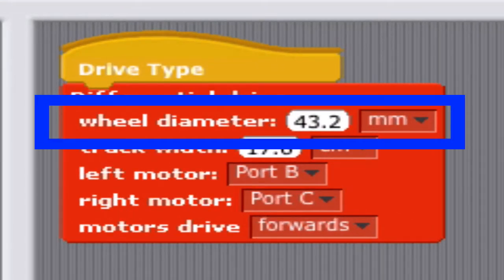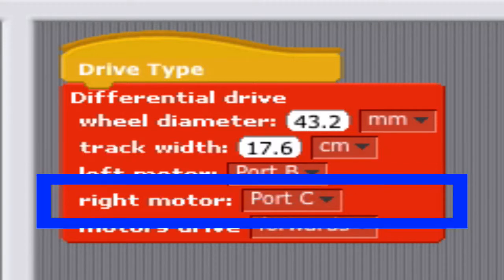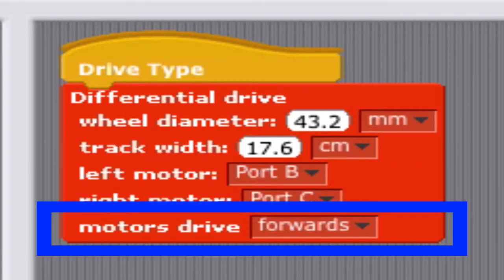The wheel diameter, the track width, which one is the left and which one is the right motor, and if the motors are driving forward or in reverse.